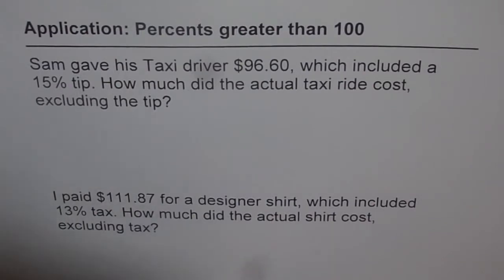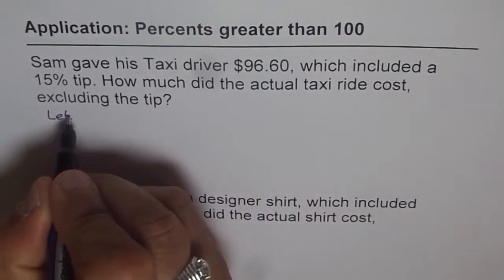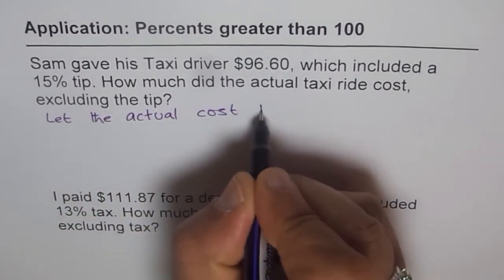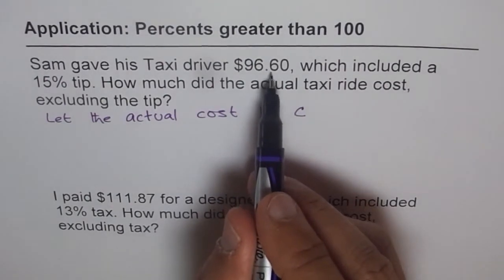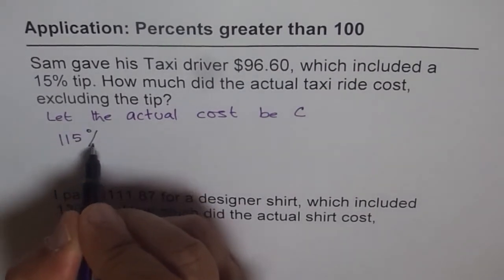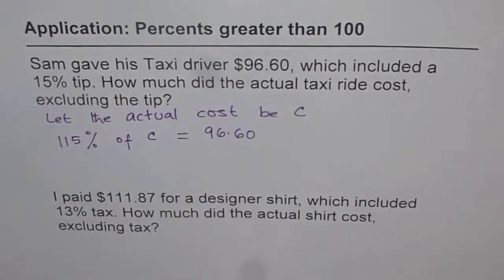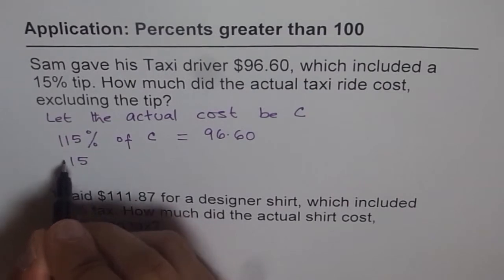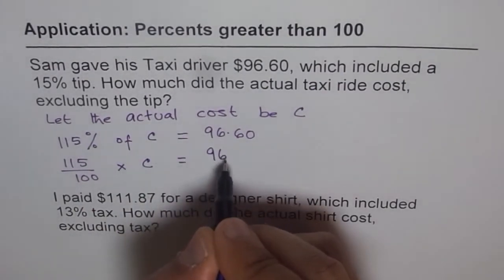So we get our equation. Let the actual cost be C in dollars. The amount paid is $96.60, which is 115% of C. Then 115% of C equals 96.60. Translating percent and 'of' and 'equals to', we get 115 over 100 times C equals 96.60.